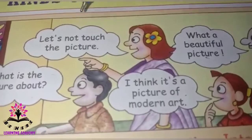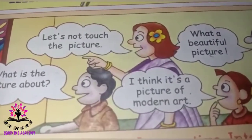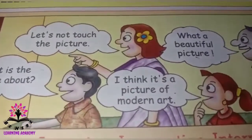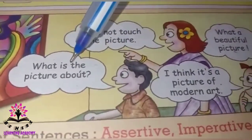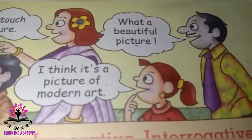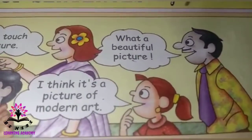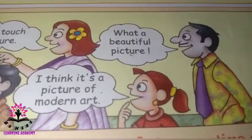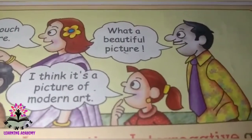The second type of sentence is imperative sentence. For example, 'Let's not touch the picture.' Imperative sentence expresses command, order, or request. It always ends with a full stop. The third type is interrogative sentence — 'What is the picture about?' Interrogative sentence always ends with a question mark. The fourth type is exclamatory sentence — 'What a beautiful picture!' An exclamatory sentence expresses sudden strong feelings. It always ends with an exclamation mark.